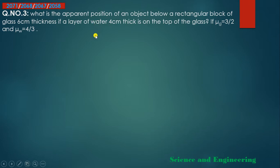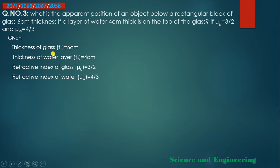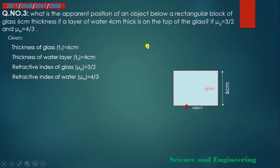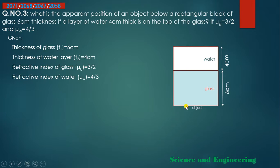Let's discuss why the object appears raised (uuncha). First, let's write what is given: thickness of rectangular glass, thickness of water layer, refractive index of glass, refractive index of water. Draw a figure — the glass is below and the water layer is on top. Light from the object travels normally; at the surface, rays traveling at a certain angle will bend. When going from glass to water, the medium changes — what happens to the light?